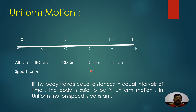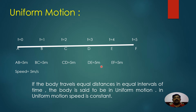The car is covering equal distances in equal intervals of time. In the first second it covered 5 meters, in the next second also 5 meters, in the third second 5 meters, and in the fourth second also 5 meters. For each and every second it covers a distance of 5 meters. If a body travels equal distances in equal intervals of time, the body is said to be in uniform motion.